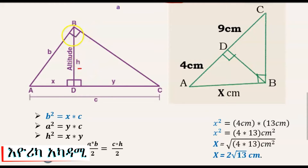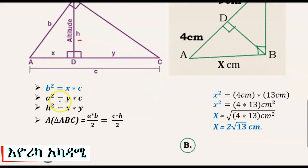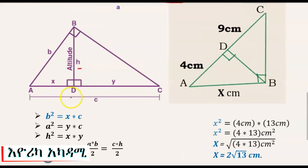In the right angle triangle, AC is the hypotenuse. Using the geometric mean (key) theorem, the leg of the triangle equals the geometric mean between the hypotenuse and the projection of that leg onto the hypotenuse. So B squared equals x times the whole hypotenuse C, meaning x times C.